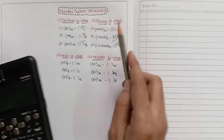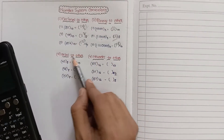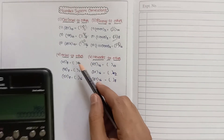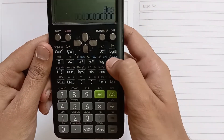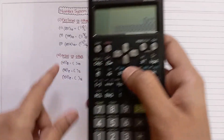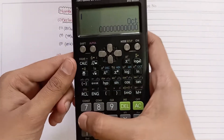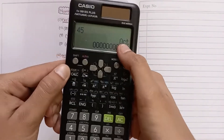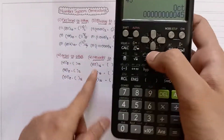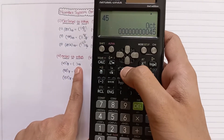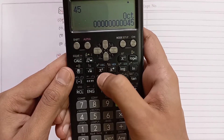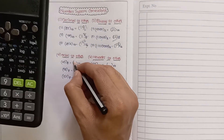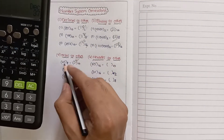Now we will see how to convert octal numbers to other number systems. Go to octal mode and enter the number 45. Store it by pressing equal to. Select decimal — the result is 37. So 37 is the required decimal number for octal 45.